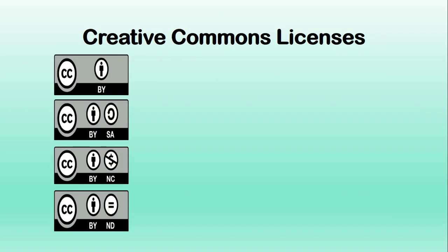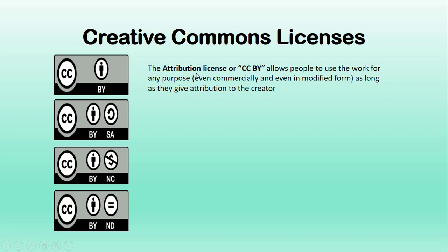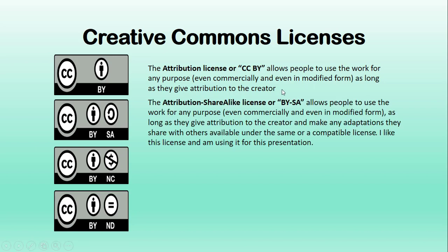Now let's take a look at the six licenses. The first is the attribution license or CC BY. This allows people to use the work of another for any purpose, even commercially and even in a modified form, as long as they give attribution to the creator. The attribution license is the most open and non-restrictive license. The attribution share-alike license, or BY-SA, allows people to use the work for any purpose, even commercially and even in a modified form, as long as they give attribution to the creator and make any adaptations they share with others available under the same or compatible license.